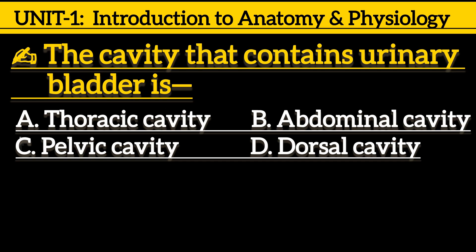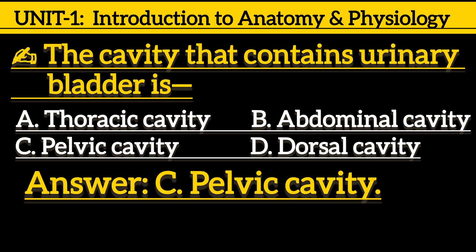Next one is, the cavity that contains the urinary bladder is: option A, thoracic cavity; option B, abdominal cavity; option C, pelvic cavity; option D, dorsal cavity. Correct answer is option C, pelvic cavity.